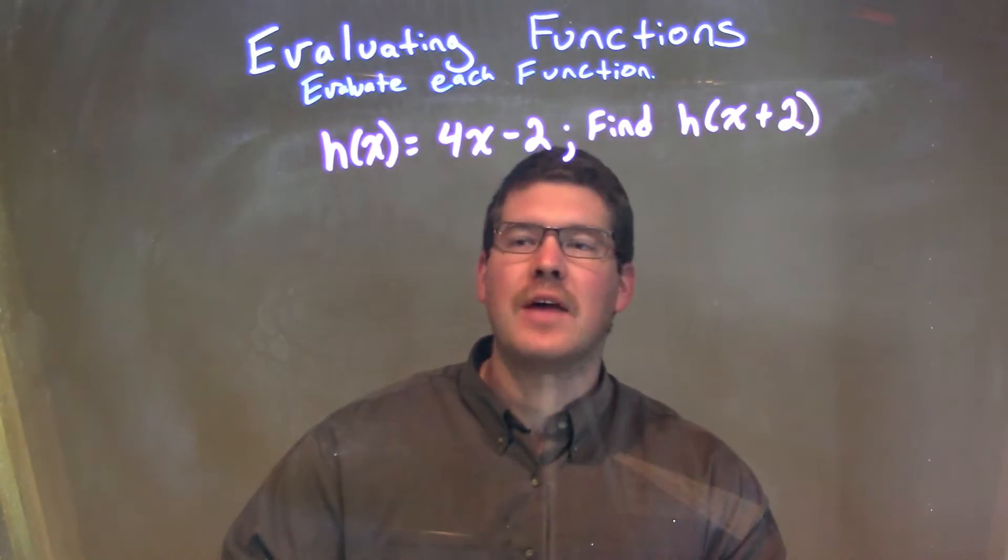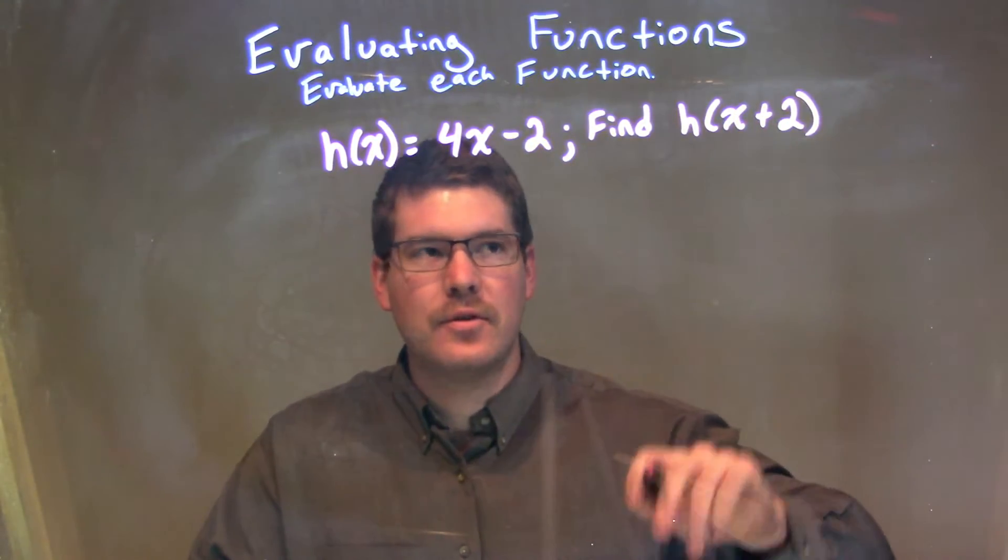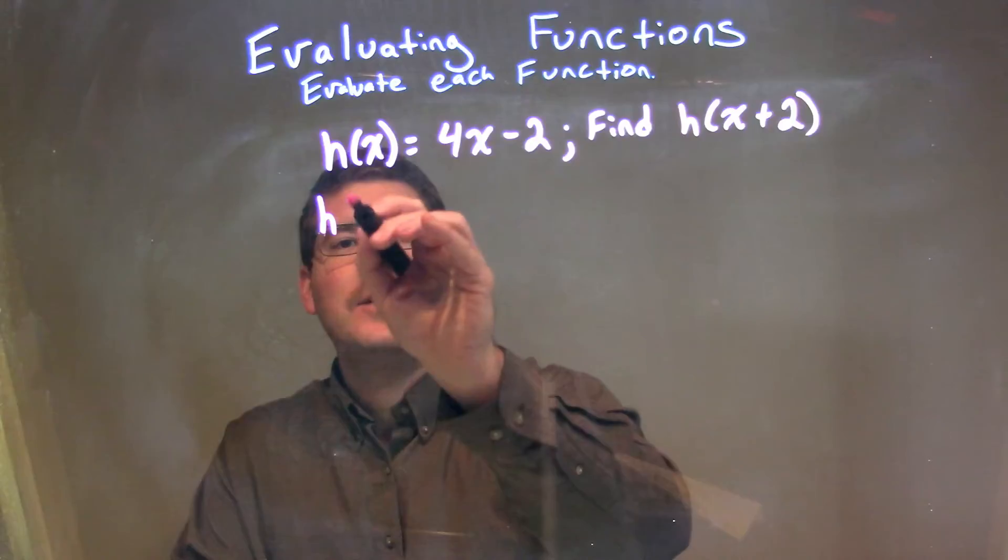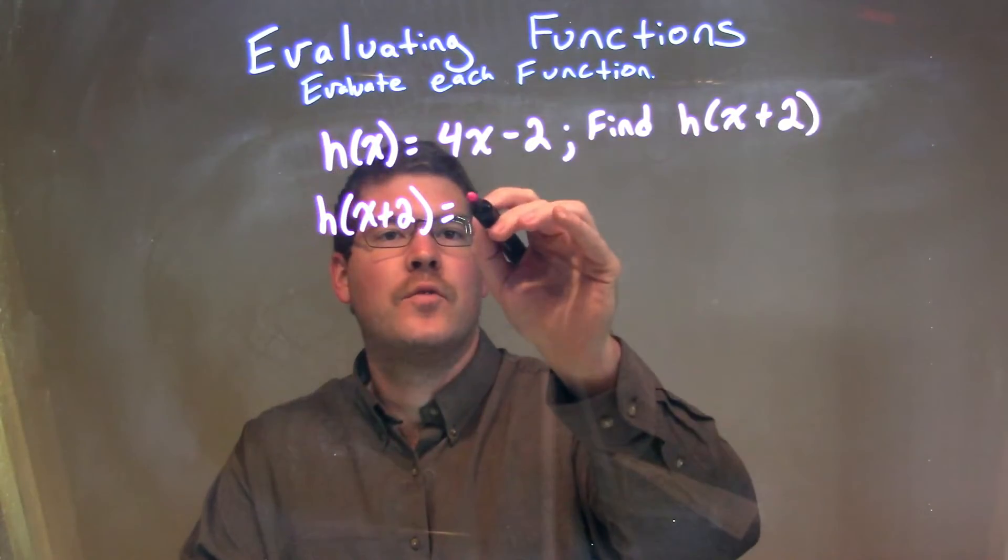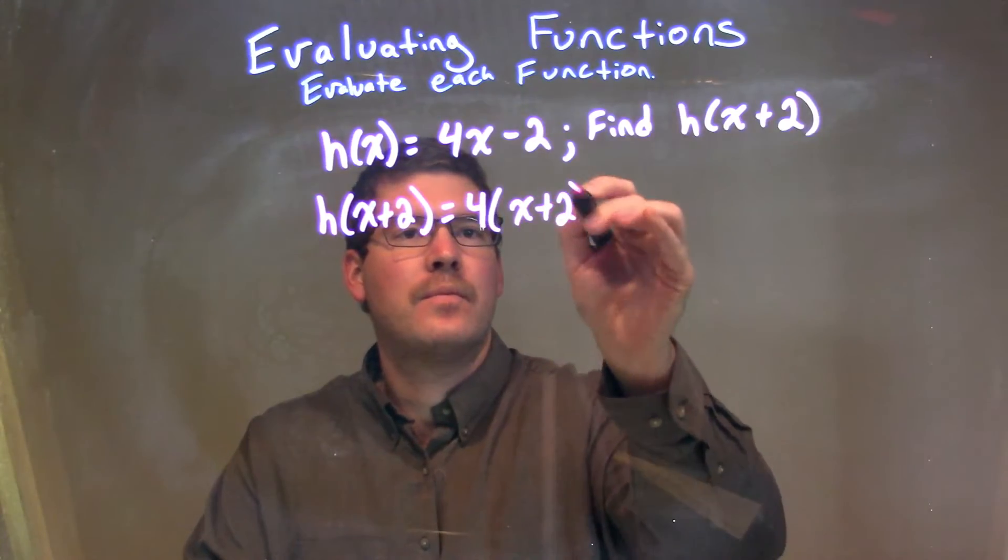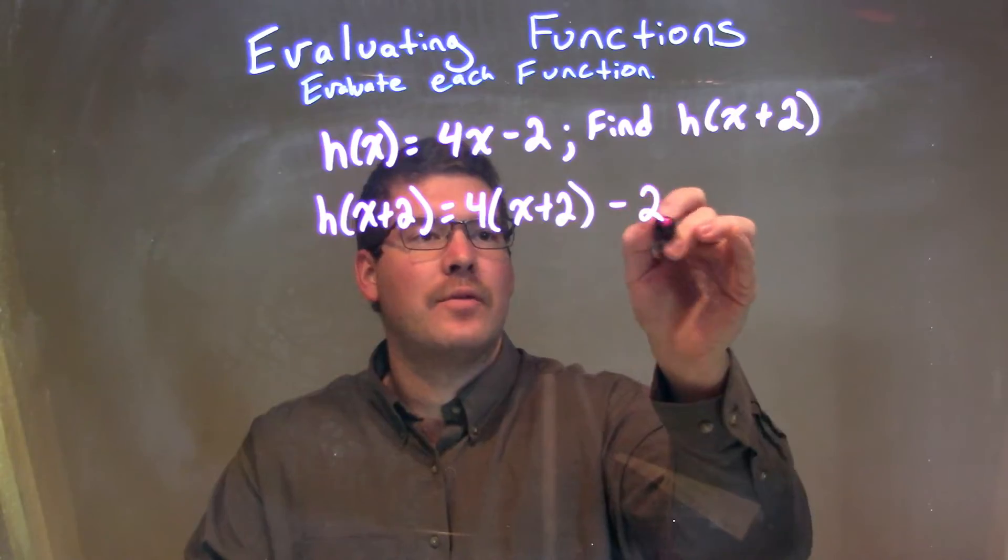All right, so what that means is every single time we see an x, we need to plug in an x plus 2. So, we have h now of x plus 2 here, and that's going to be equal to 4 times x plus 2. So, we're plugging in for that x, x plus 2, and then minus 2 on the outside.